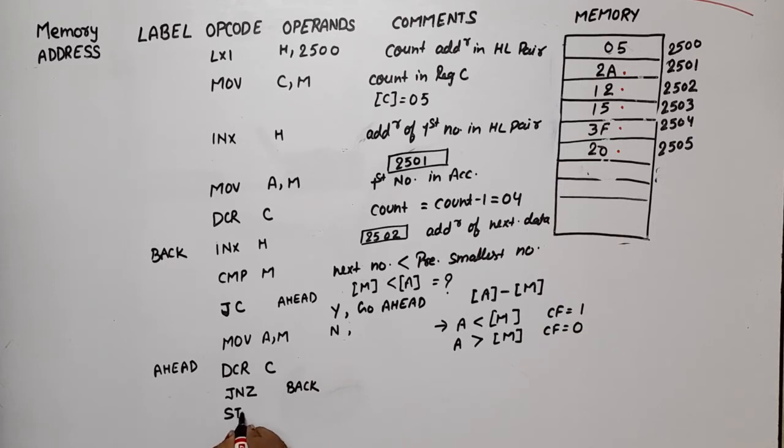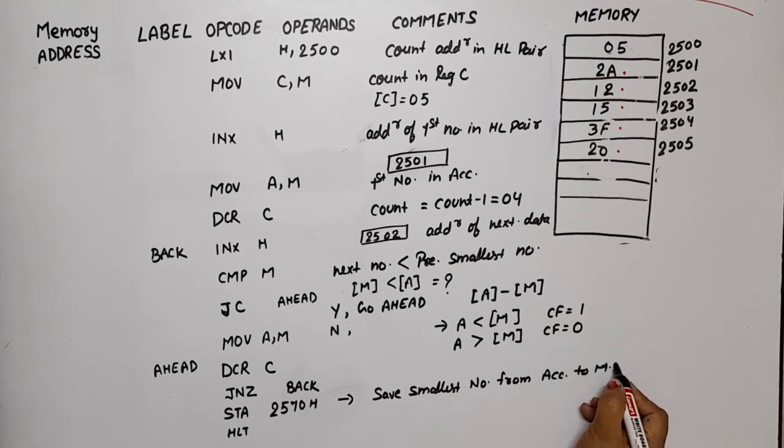Now we need to save it to memory. We write STA, suppose I save it at 2570H, then HLT. This means save the smallest number from the accumulator to memory location 2570H. For this example, the output will be at memory location 2570H, and the data will be 12H, which is the smallest.